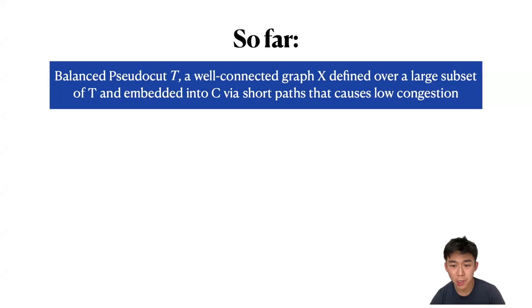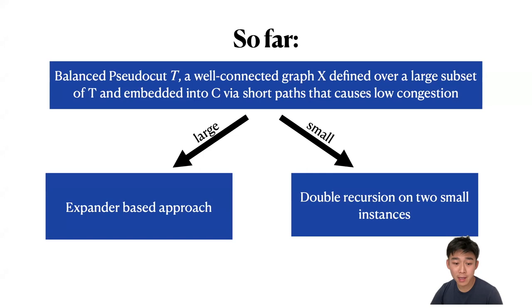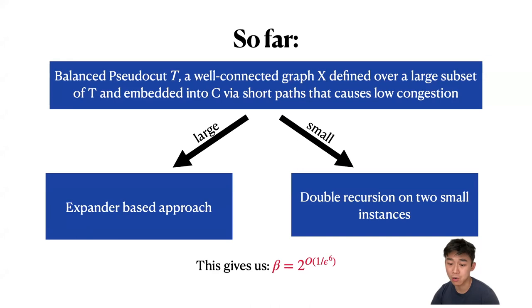With this new key result, if the pseudo-cut T is small, we do the same double recursion on two small instances as before. If T is large, we use the expander-based approach but with the expander replaced by a well-connected graph. This gives a much better approximation ratio of 2^{O(1/epsilon)^6}. This completes the high-level overview of our improved algorithm for the Maintain Cluster problem.